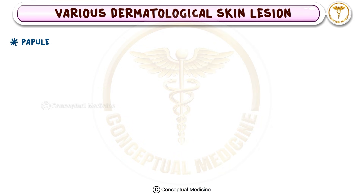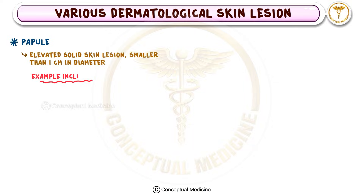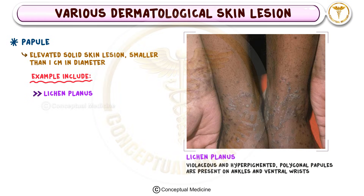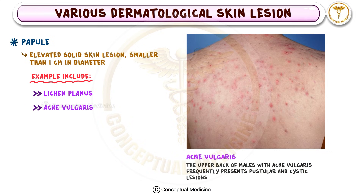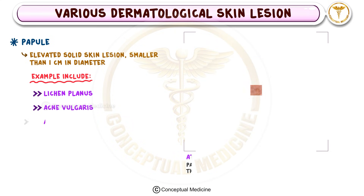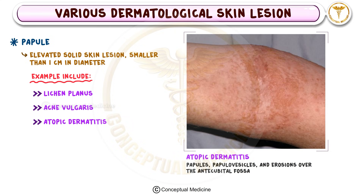Moving on, we have the papule. This is an elevated, solid lesion that's smaller than one centimeter in diameter. Papules can be seen in conditions like lichen planus, acne vulgaris, or even atopic dermatitis, where small raised lesions often accompany inflammation and itching.